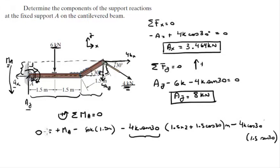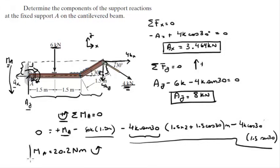And all of that is equal to 0 because it's statics. So when you plug this in the calculator and you solve for MA, you get that the moment is equal to 20.2 Nm, and it's going to be positive, so it's going counterclockwise because that's what we assumed originally.